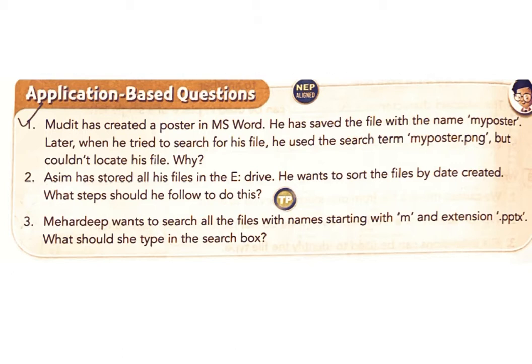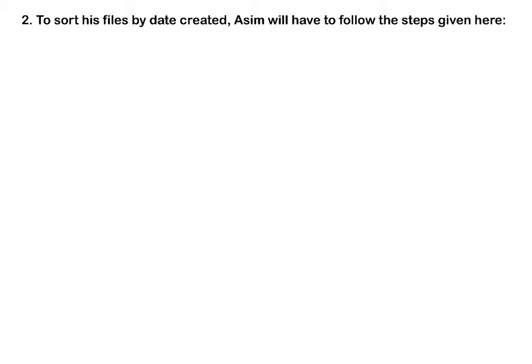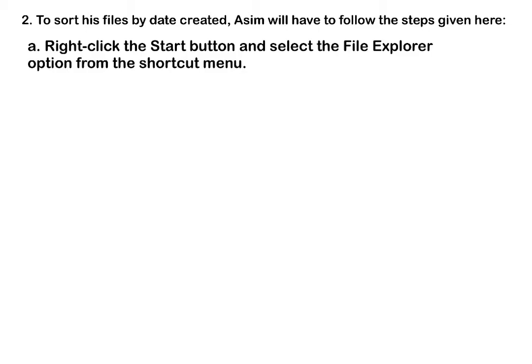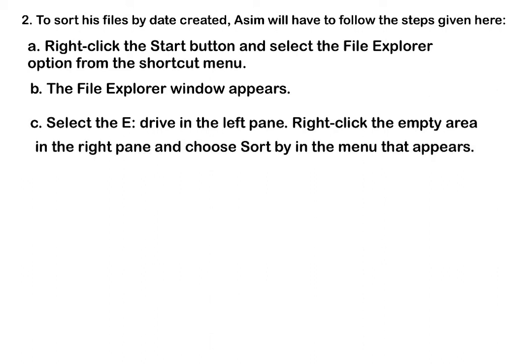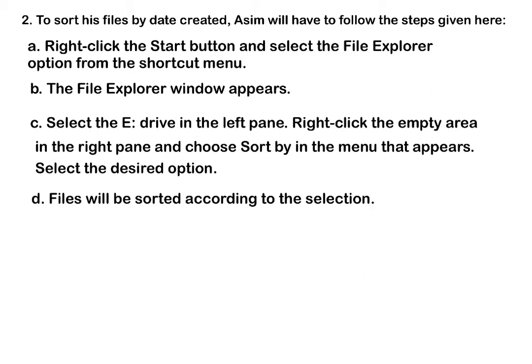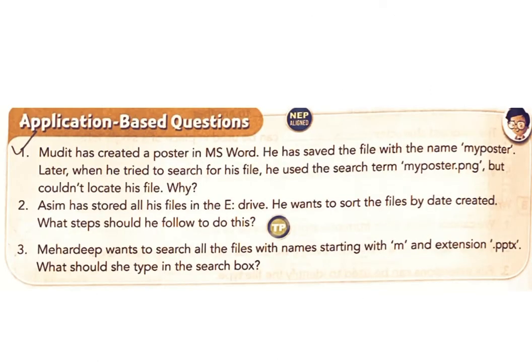Question 2: Asim has stored all his files in the A drive and wants to sort them by date created. What steps should he follow? Answer: Right-click the Start button and select File Explorer from the shortcut menu. In the File Explorer window, select the A drive in the left pane. Right-click the empty area in the right pane, choose Sort By, and select the desired option. Files will be sorted accordingly.